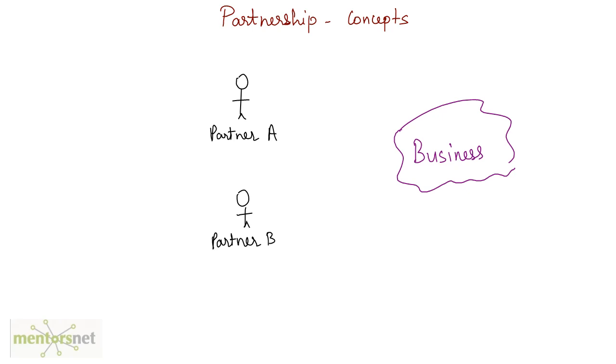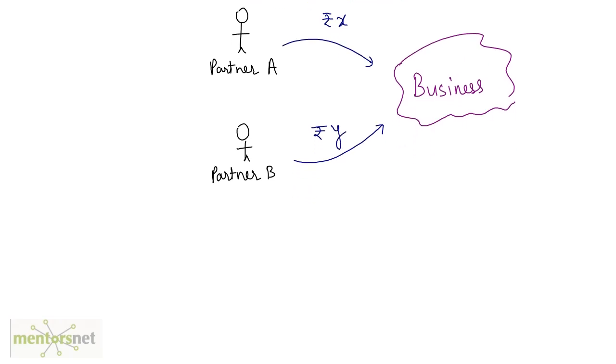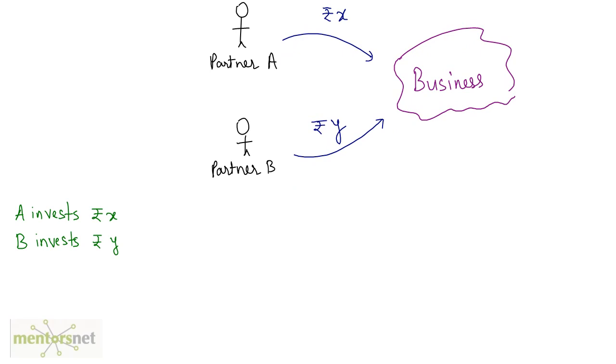Assuming that partner A invests x rupees and partner B invests y rupees, and these people invest these rupees for the same time period. Let us say that these people invest this amount x and y for one year. So the ratio of the profit earned by A and the profit earned by B is proportional to the ratio of the money they invested in.